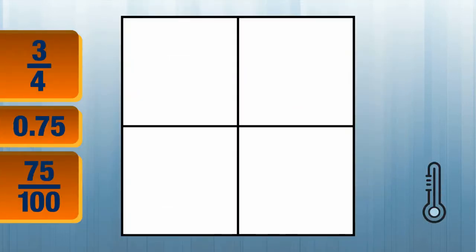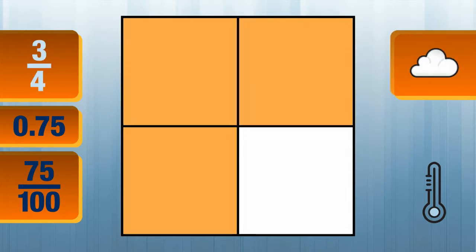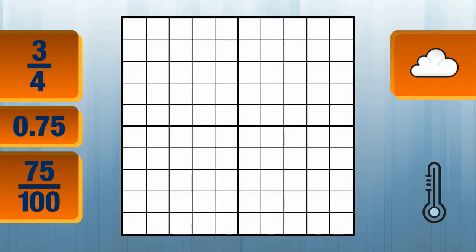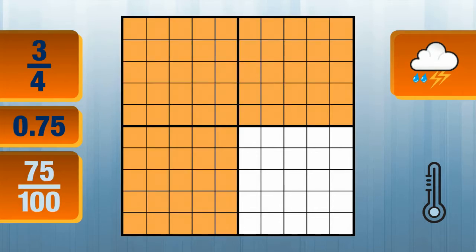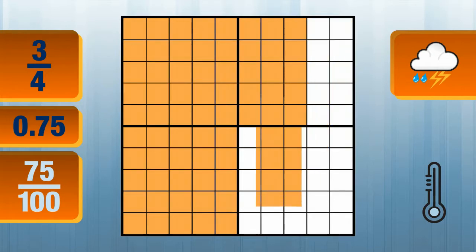I'm going to use this grid to compare amounts. This grid represents one inch of rain. Here's my three-fourths of an inch. What if we were to divide this square into 100 equal parts? How many parts would be shaded? Each quarter now has 25 parts, so that's 75 hundredths. They're exactly the same amount.